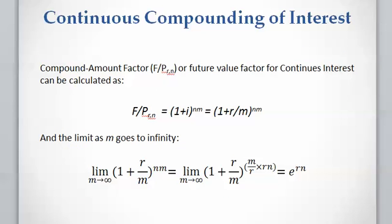Now let's calculate the compound amount factor F/P, or future value factor, for continuous interest. This factor equals (1 + i)^(n·m), and we can rewrite i as r over m. We need to calculate the limit as m goes to infinity. This term approaches zero and this term approaches infinity, so we can extract an e term and calculate the limit as e^(rn).